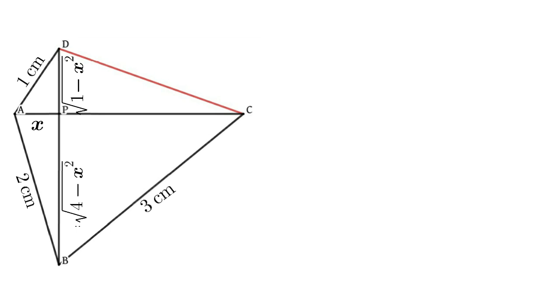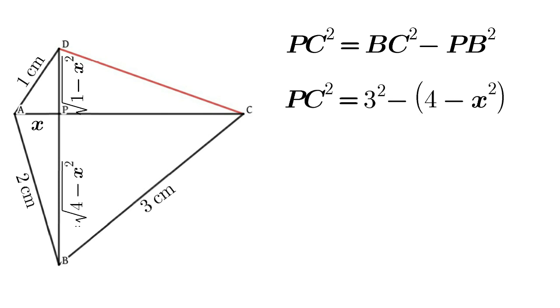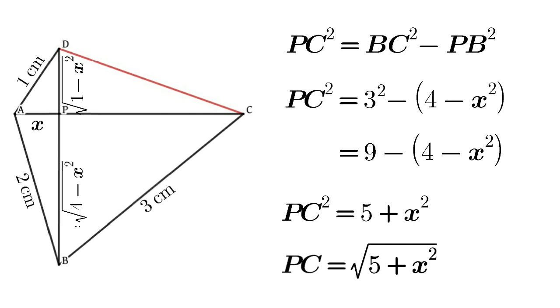Now apply Pythagorean theorem in triangle PBC. PC squared equals BC squared minus PB squared. That is, PC squared equals 3 squared minus (4 minus x squared), which is equal to 9 minus 4 plus x squared. That is, PC squared equals 5 plus x squared, or PC equals root of 5 plus x squared.